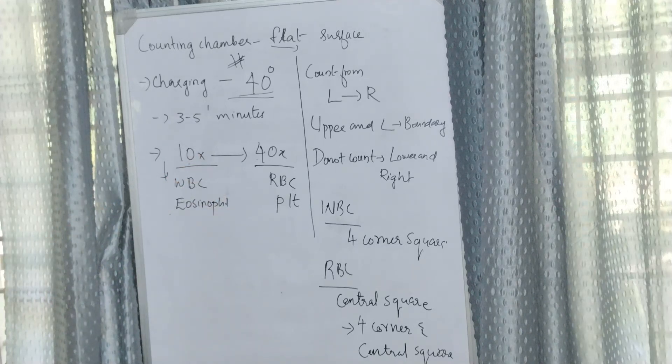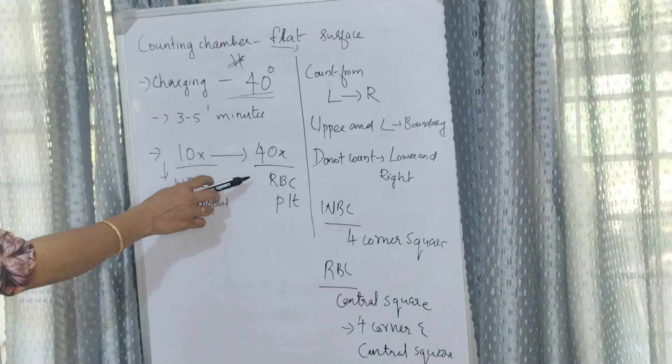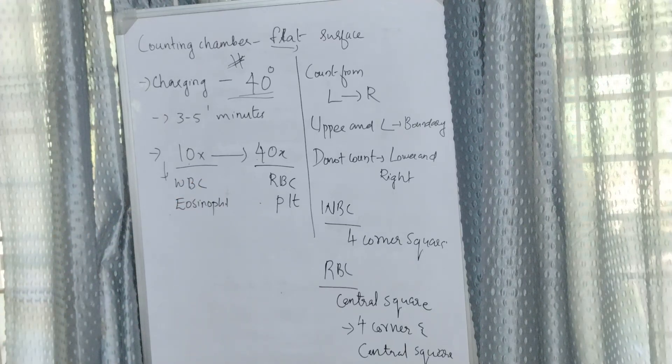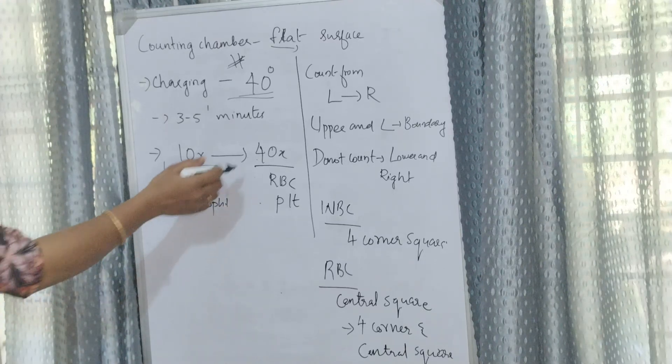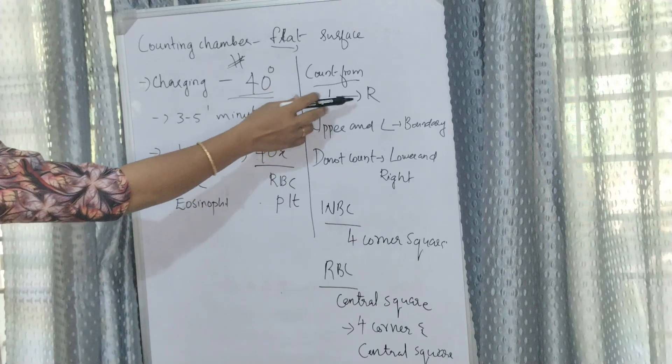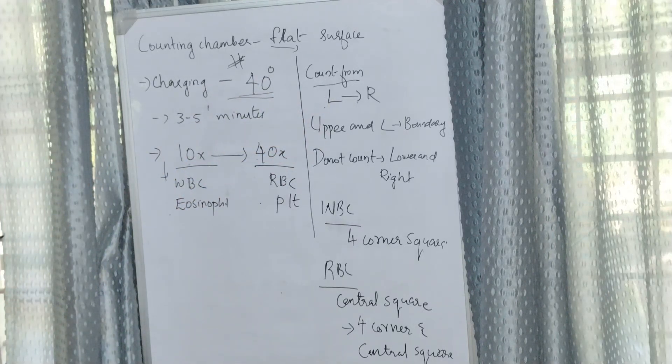The ruled area has to be focused first under low power, then under high power. Low power objective is used for doing total WBC count and absolute eosinophil count. High power objective is used for RBC counting and platelet counting.